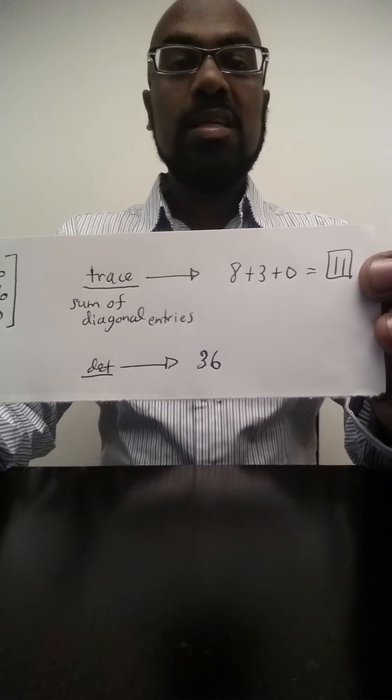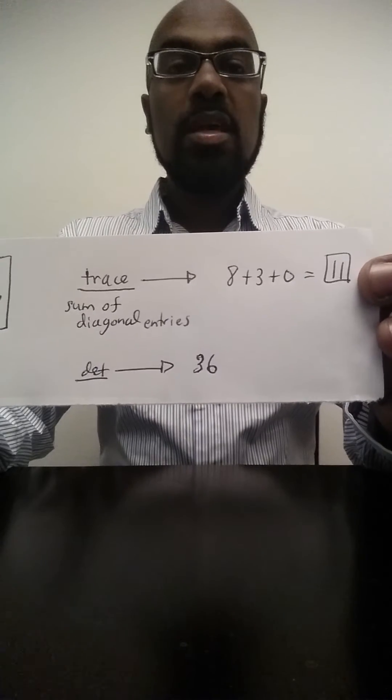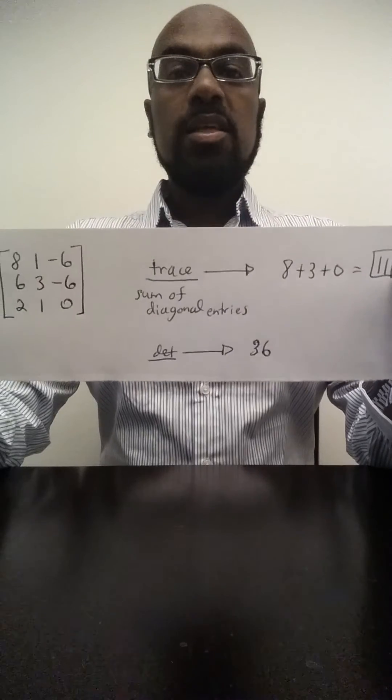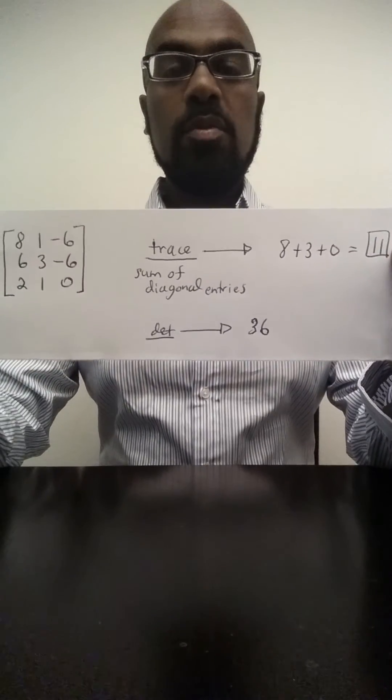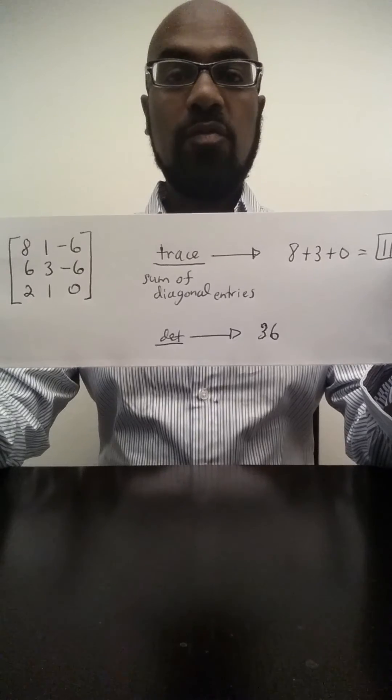Now, the reason that the trace is the sum of the eigenvalues and the determinant is the product, you can get by analyzing the Jordan canonical form of this matrix. But we'll omit a proof and explanation of that in the video. At least we know what the formula for a trace and determinant are in terms of eigenvalues so we can use it for the subject test.